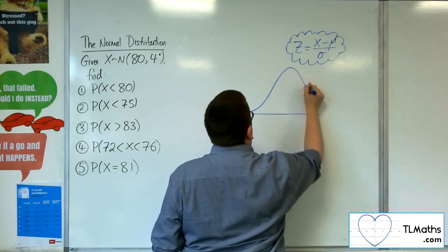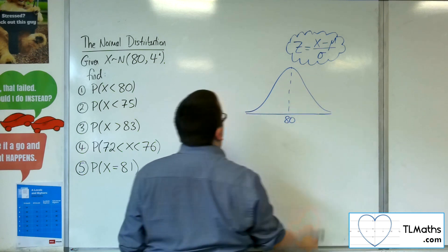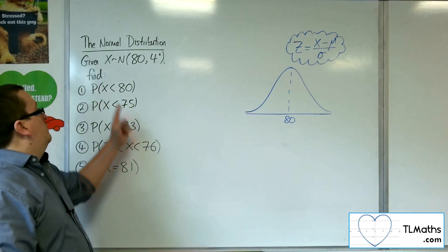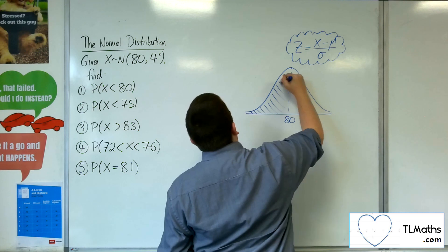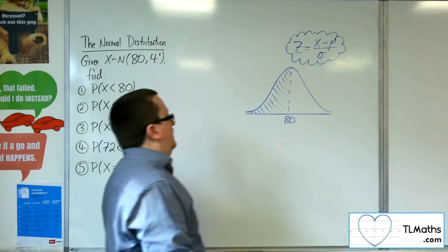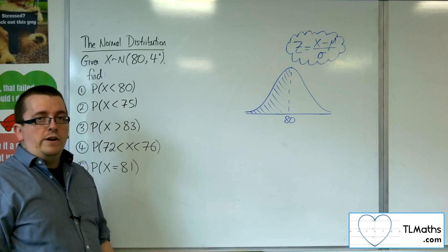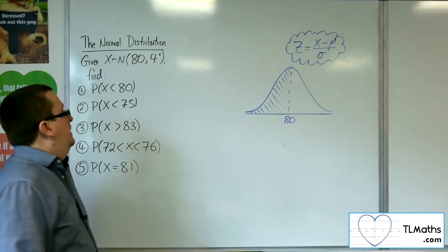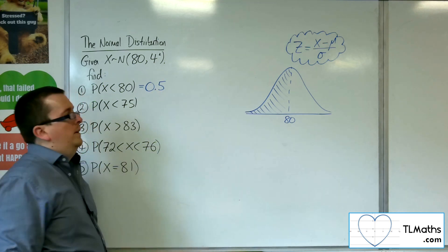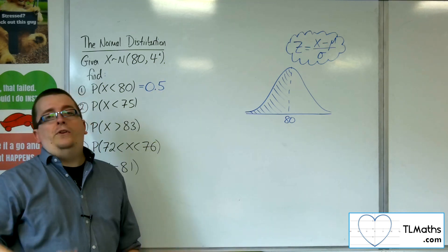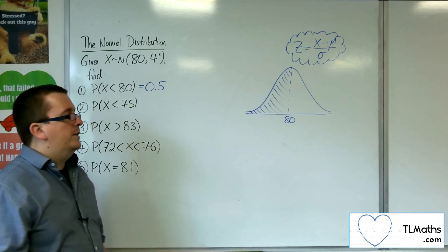Drawing a diagram where the mean is 80, I want to find the probability that X is less than 80, so I want to find this area. Now clearly, because I've shaded half of the area of the normal distribution, this will have to be one half. We want to check this and make sure it makes sense using the formula and on our calculator.